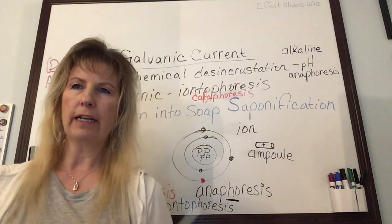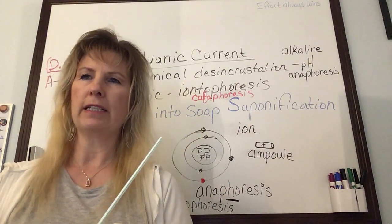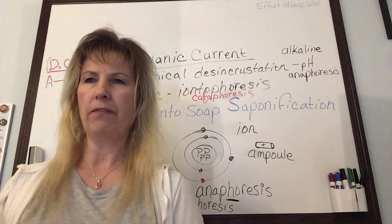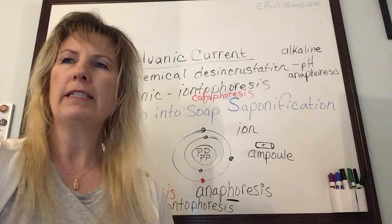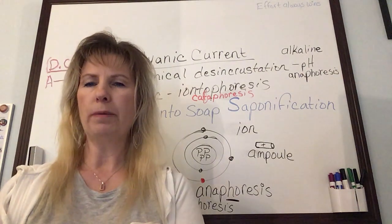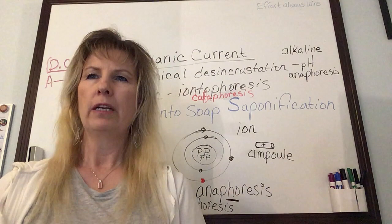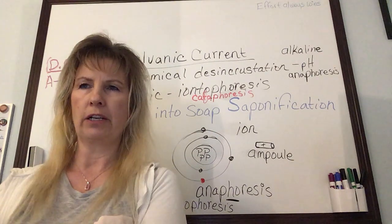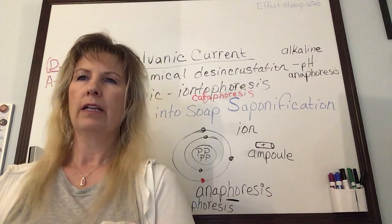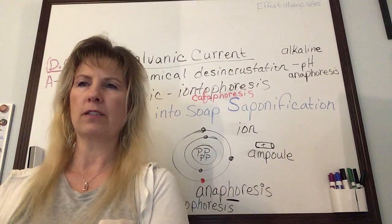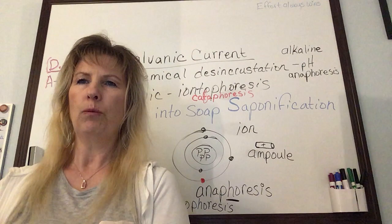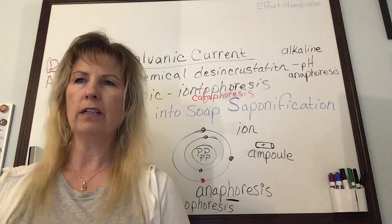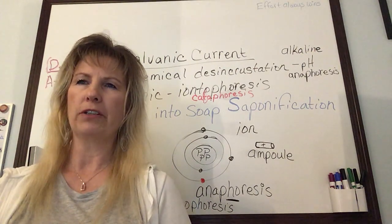This creates a chemical reaction that transforms sebum in the skin into soap — a process known as saponification. Soap is made from fat and lye (sodium hydroxide). When the electric current interacts with the salts in our skin (sodium chloride), it creates sodium hydroxide, which dissolves excess oil, clogged follicles, comedones, and other debris while softening the skin.